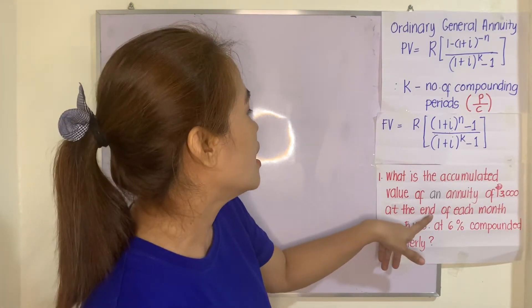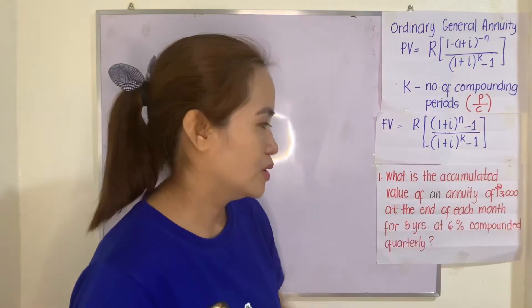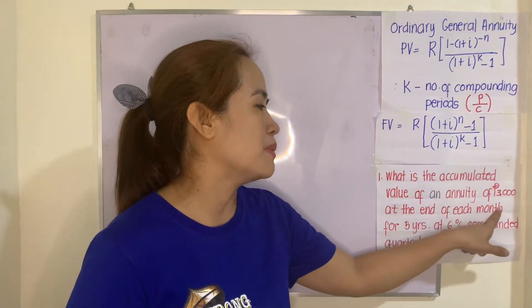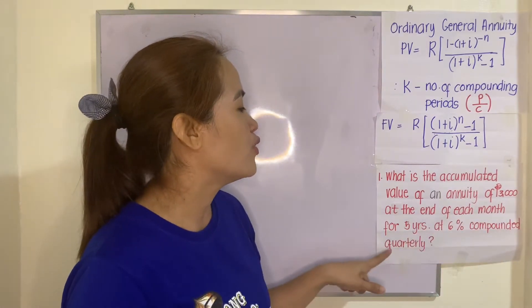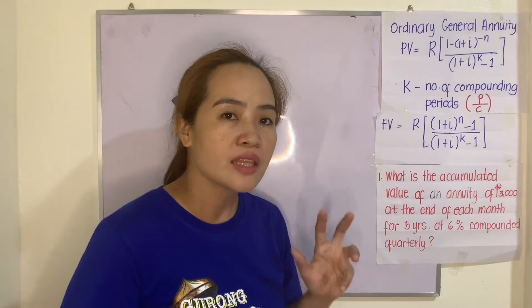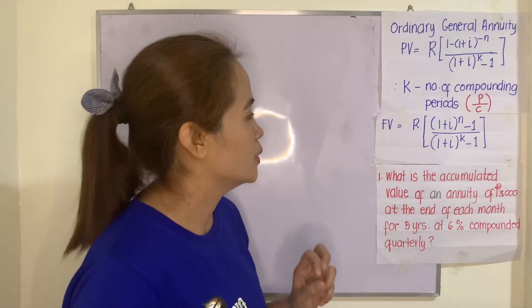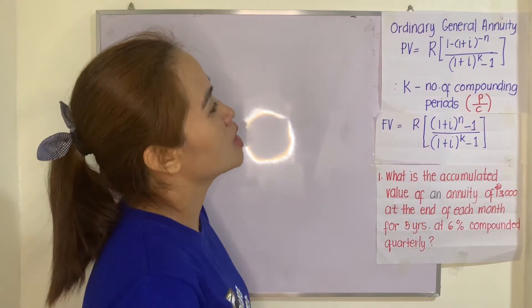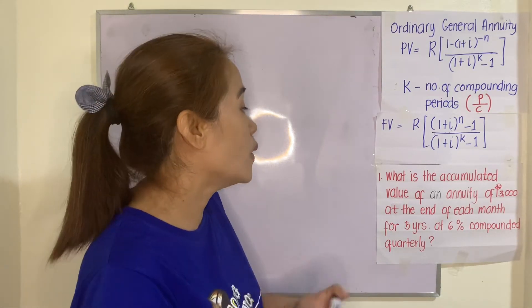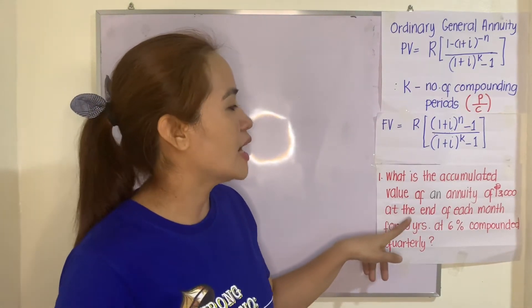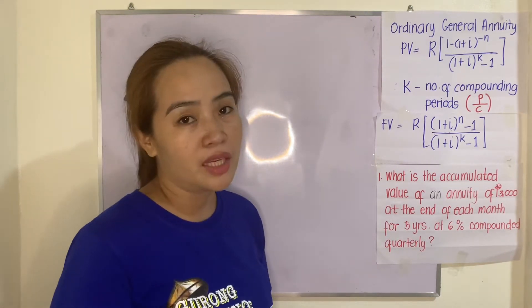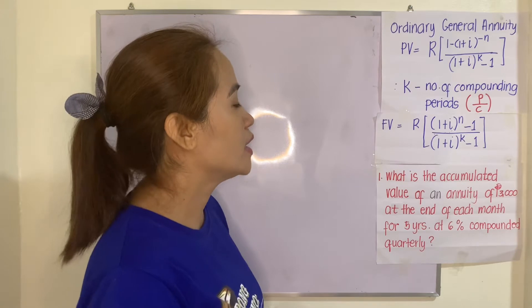It says here 'each month' — that is the payment interval — and 'compounded quarterly' — that is the compounding interval. Since these are different, it is really a general annuity. Let's see whether it is ordinary. It says 'at the end of each month for 5 years,' so meaning this is really an ordinary general annuity.